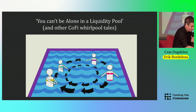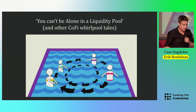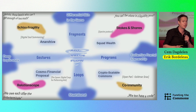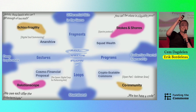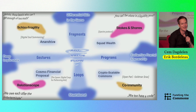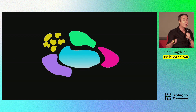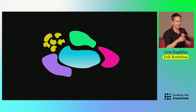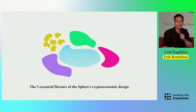This might sound a bit lofty, but it isn't. If you're starting to feel like you're drowning in the liquidity pool, this is the last image you will see as you look at the top — the weirding of art and value flows is real. And when you're in the design space, that's what you see, designed by Lara Lotte. These are the five flavors of the Sphere's cryptoeconomic design.